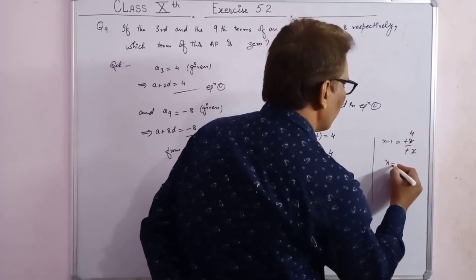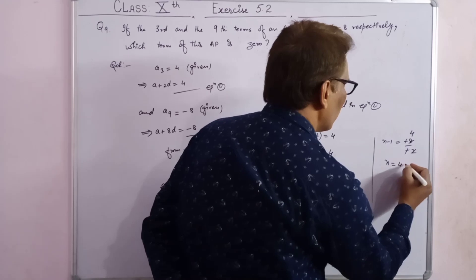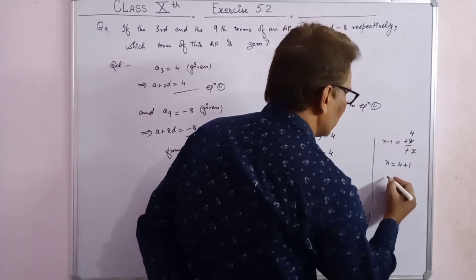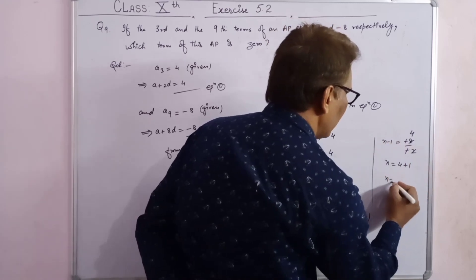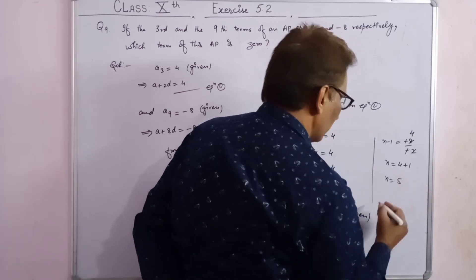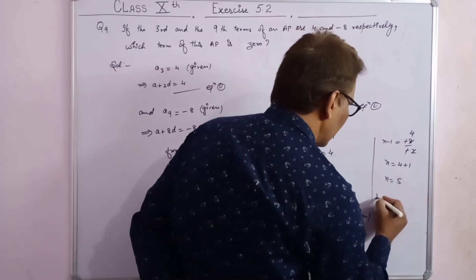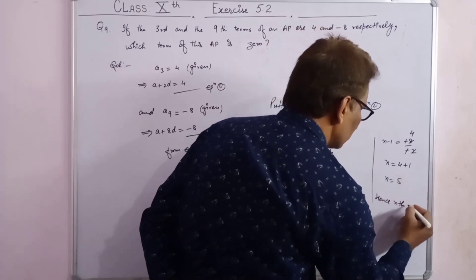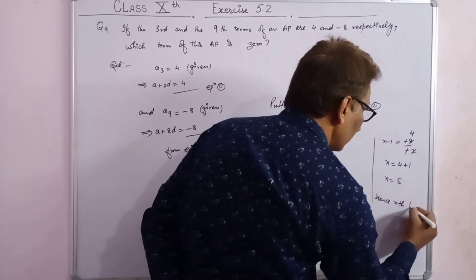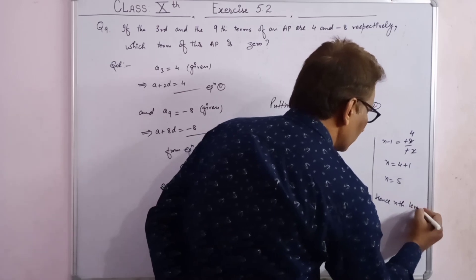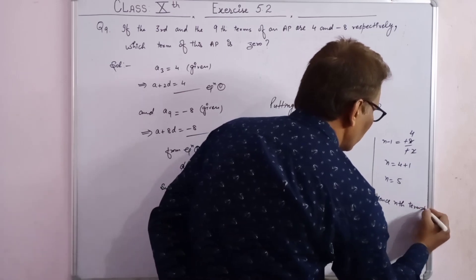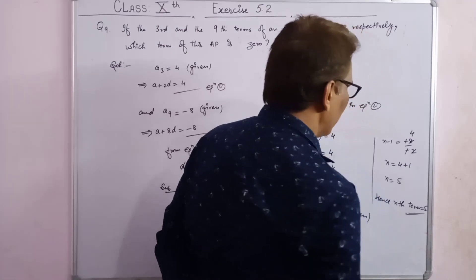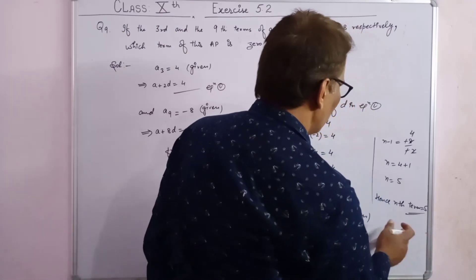Therefore n equals 4 plus 1 equals 5. Hence the 5th term of this AP is 0.